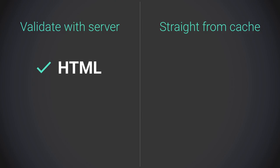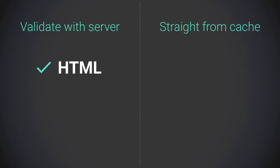Something that does normally need to be revalidated is HTML, since that's the primary resource and the source of truth for your app. Here you want a cache header like this: private, no-cache. That tells the browser that the resource is intended for just that user and that it should check with the server before serving it.